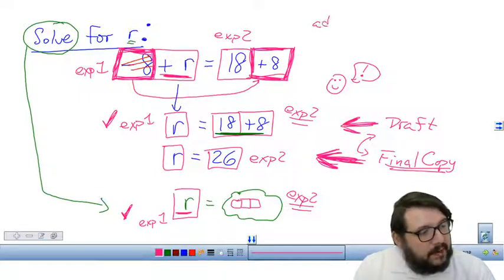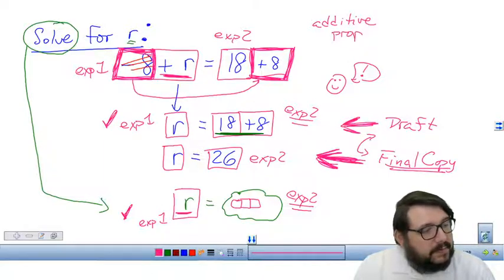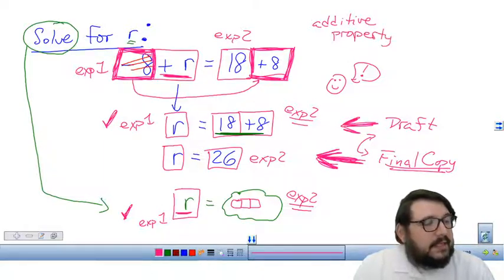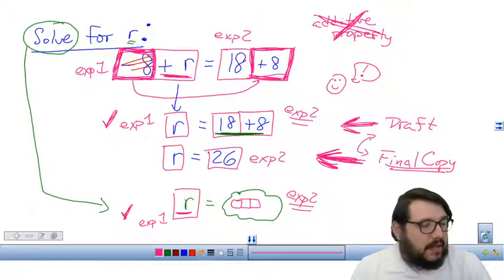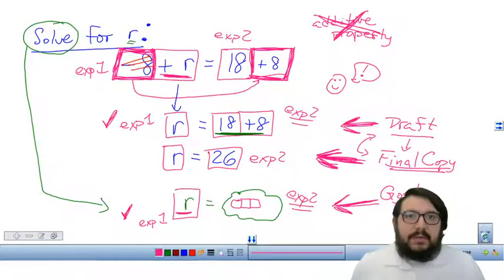This is called the additive property, by the way, additive property. But as I always say, these words are very old because math is very old. And it's not so much important that you know that this word is that this is called the additive property of equality. What's important is that you know that you can move terms over to the other side of the equal sign. I hope that you learned something today.